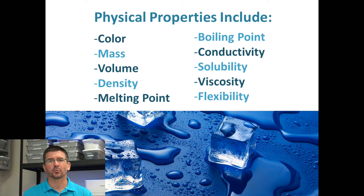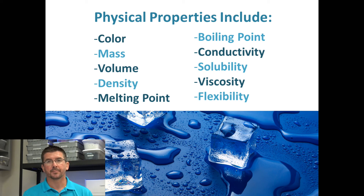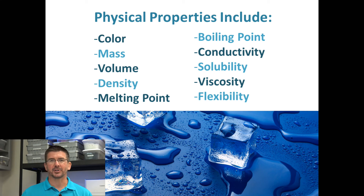Flexibility is the last physical property on our list, and it just determines how easily or effectively an object can bend or flex without breaking. These are just a few examples of physical properties that an object can have — properties that we can observe, measure, and test without changing the identity of the substance.